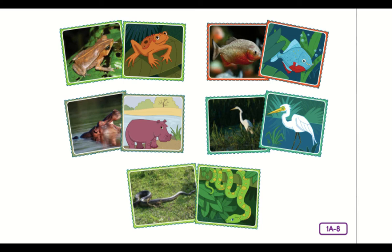They all belong to the animal kingdom, like you and me, and they are like us in another way — they all have backbones. Now, things get tricky. We are all animals and we're all vertebrates, but we are not all the same. You and I belong to the class or group called mammals. What makes mammals different from other classes of animals is that they have fur or hair, and their mothers give birth to live babies and feed their babies with the milk their bodies produce. You will learn more about these and other characteristics of mammals another day.